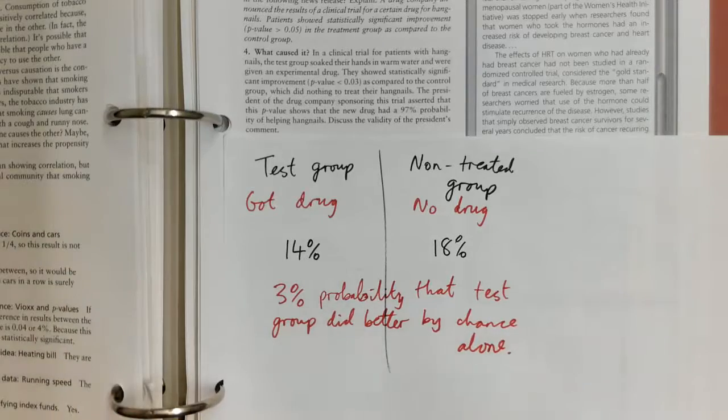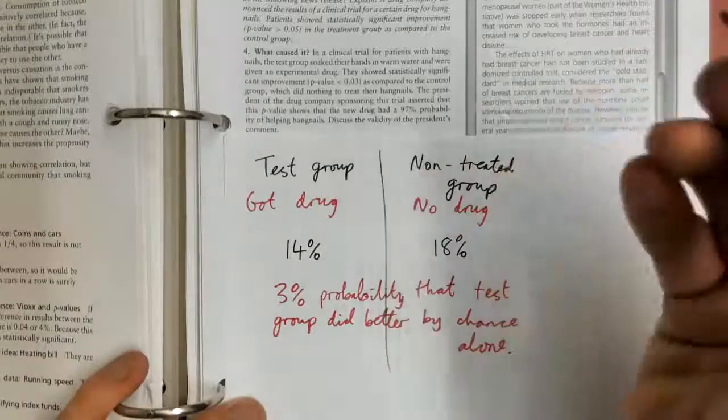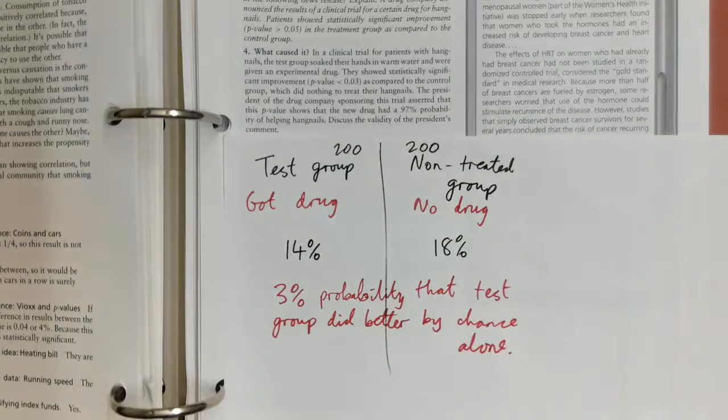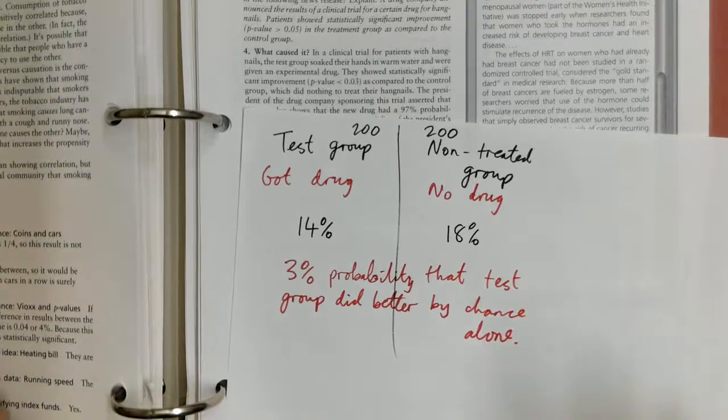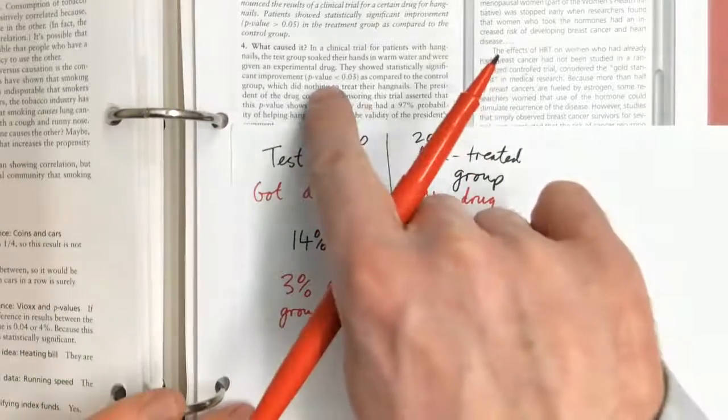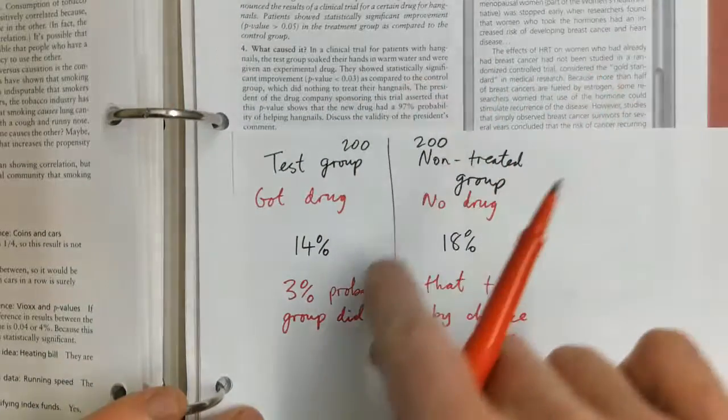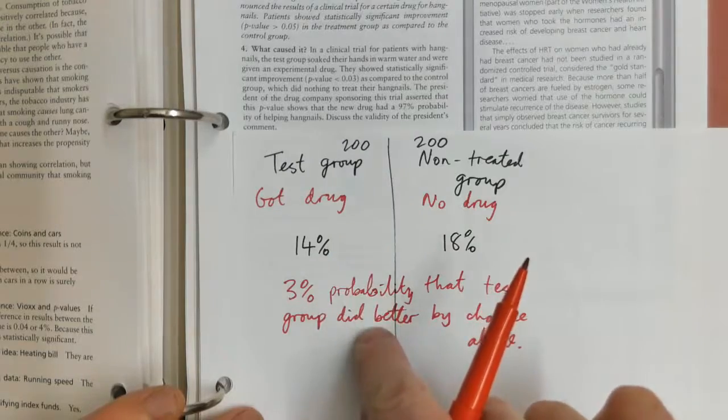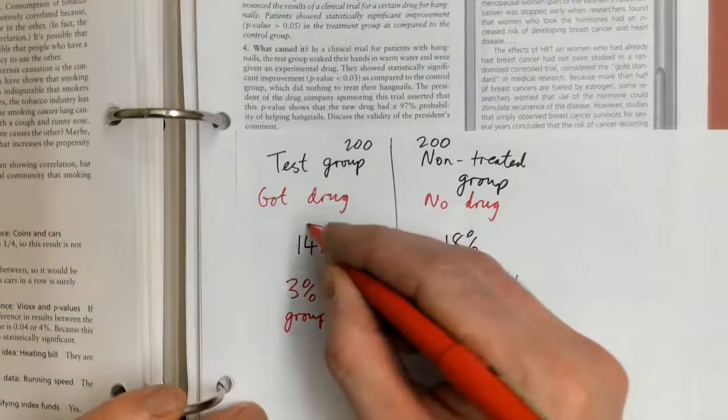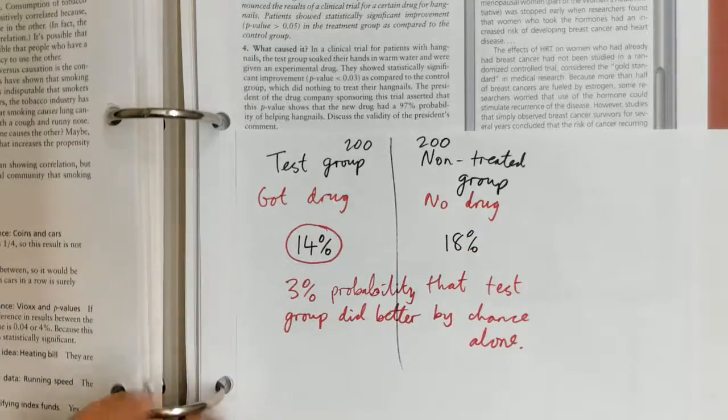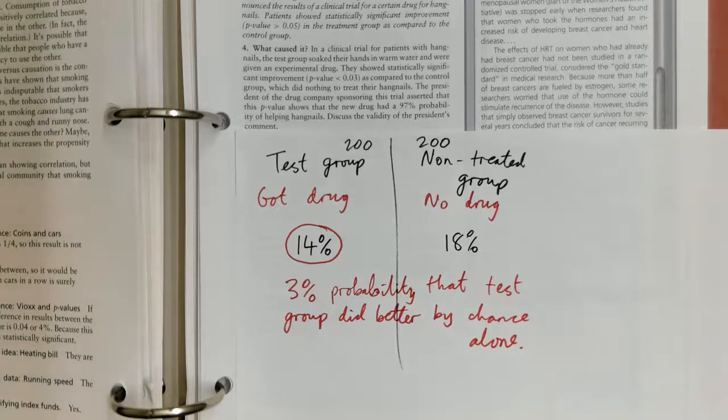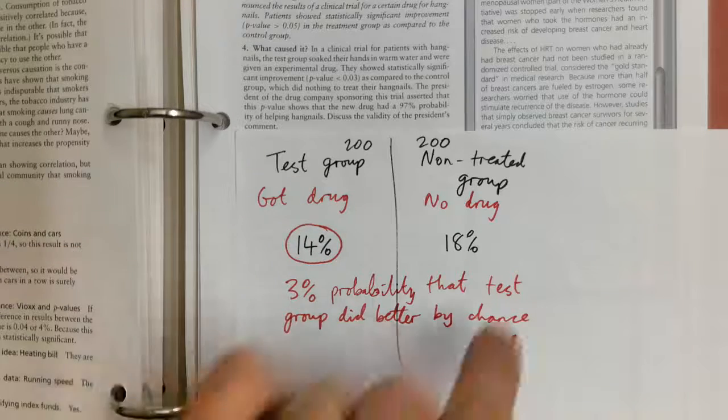It could be 200 people in each group or 300 or 150—I haven't worked it out. But the point is that the p-value is less than five percent, and so people like to conclude that the drug must have worked. It must be because of the drug, because it's not just a coincidence that this group had fewer hangnails than this group.